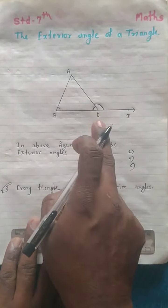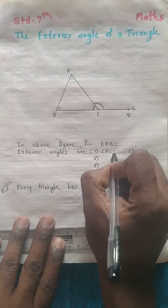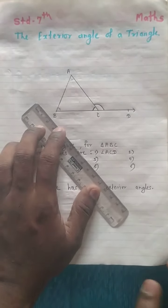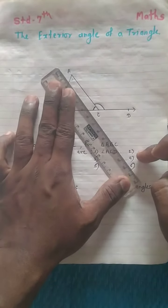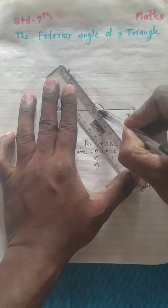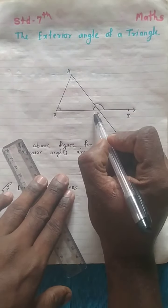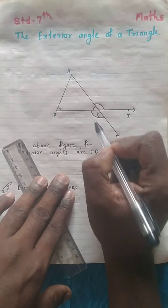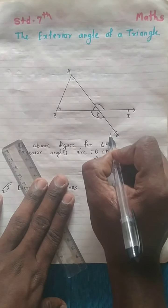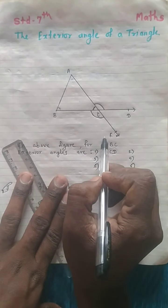So we get angle ACD as the first exterior angle on one side. Now we will extend another side — we extend side AC. By extending side AC this way, we then get angle BCE.